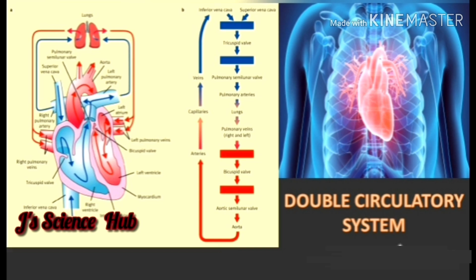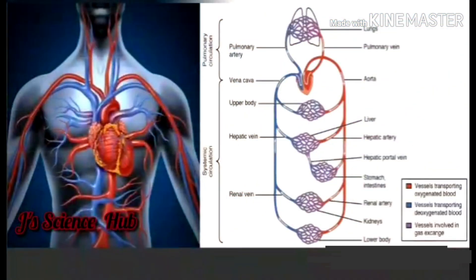When the right atrium starts to contract, the right ventricle starts to relax simultaneously. The deoxygenated blood is transferred from the right atrium to the right ventricle through the tricuspid valve.